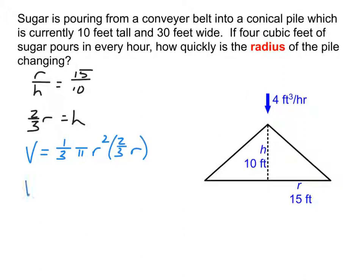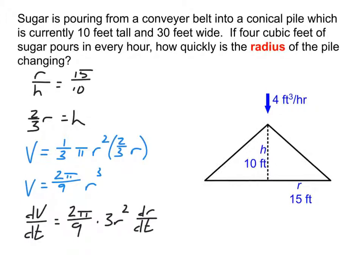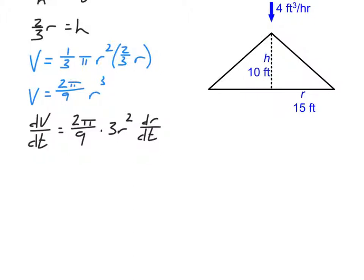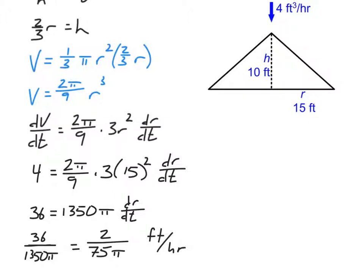Plugging h = 2r/3 into the volume formula gives V = (1/3)π r² · (2r/3). Simplifying that, we get V = 2π/9 · r³. Notice I didn't have to square the 2/3 this time since it's substituting for h, not r. Taking the derivative with respect to time and plugging in known values, solving for dr/dt gives an answer of 2/75π feet per hour.